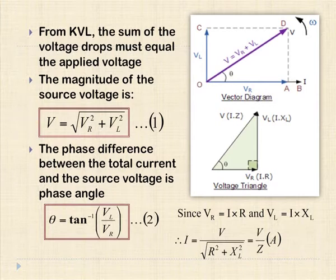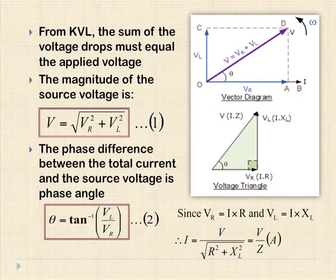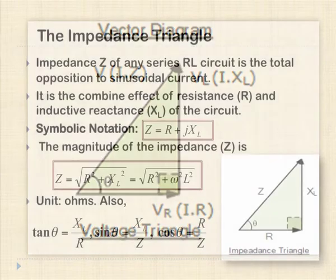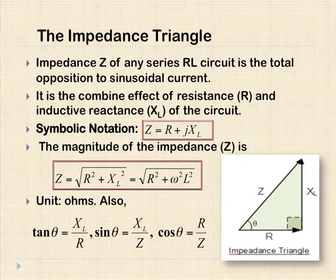We can also find the phase difference between the total current and the source voltage by the equation theta = tan⁻¹(Vl / Vr). Since Vr = IR and Vl = IXL, substituting these values, we get the relationship between I and V as I = V / Z. In this AC circuit, this ratio is known as the impedance. So if we divide the voltage triangle by the current, we get another triangle whose sides represent the resistance, reactance, and impedance of the coil. This new triangle is called the impedance triangle. The impedance Z of any series RL circuit is the total opposition to the sinusoidal current and is the combined effect of resistance and inductive reactance.